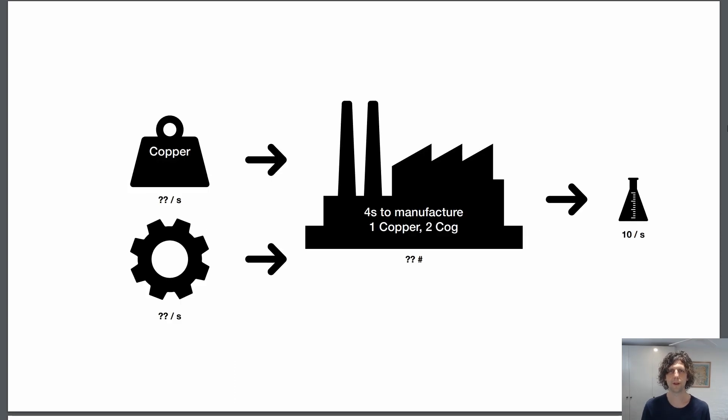This is the problem in Factorio. Given some inputs and a machine that can combine those inputs into an output with certain times and input numbers and whatnot, how do I get a designated rate of output?